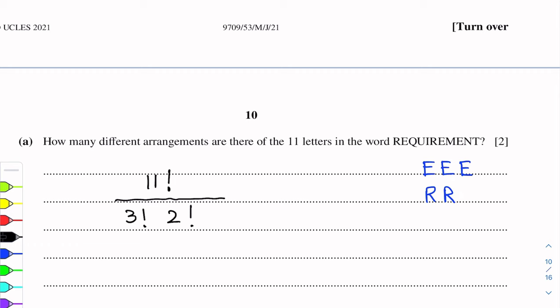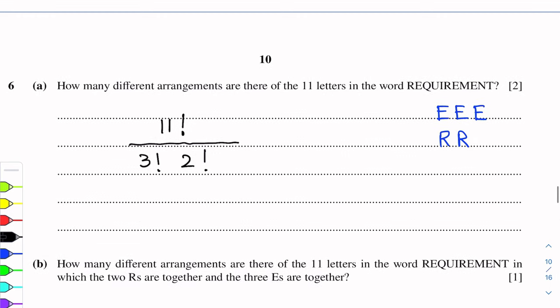This is the answer. If we calculate it, 11 factorial over 3 factorial times 2 factorial equals 3,326,400. These are the number of arrangements.